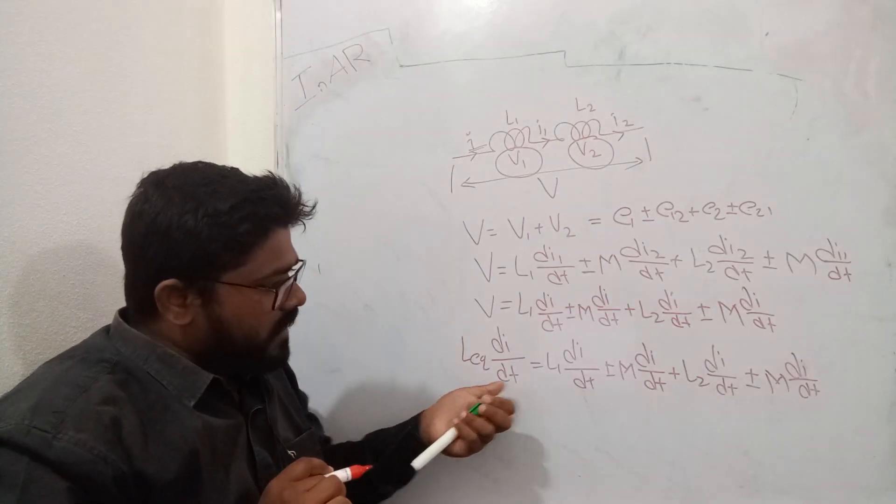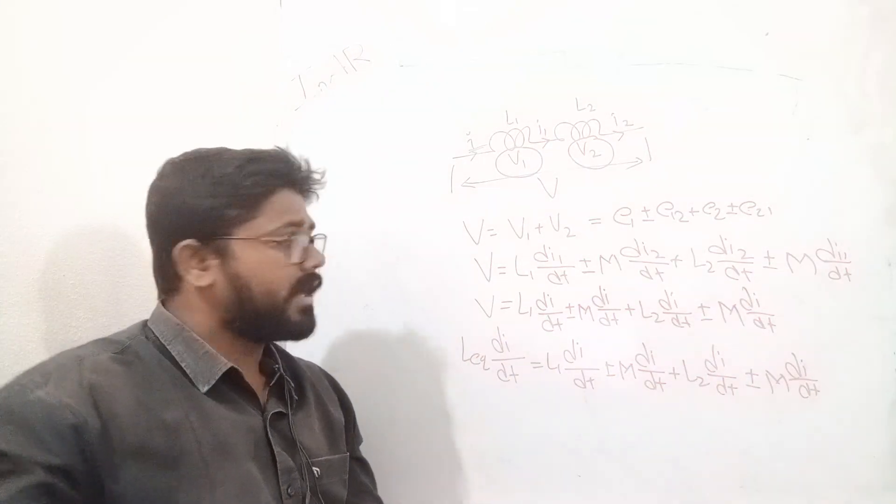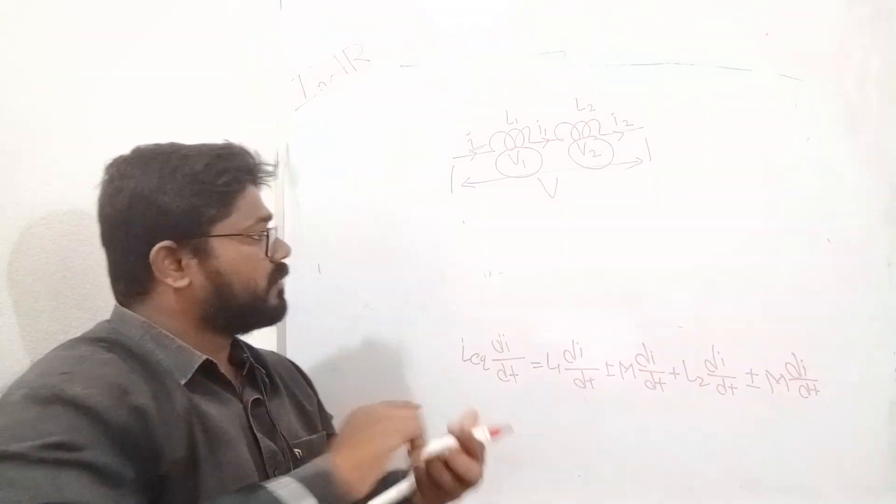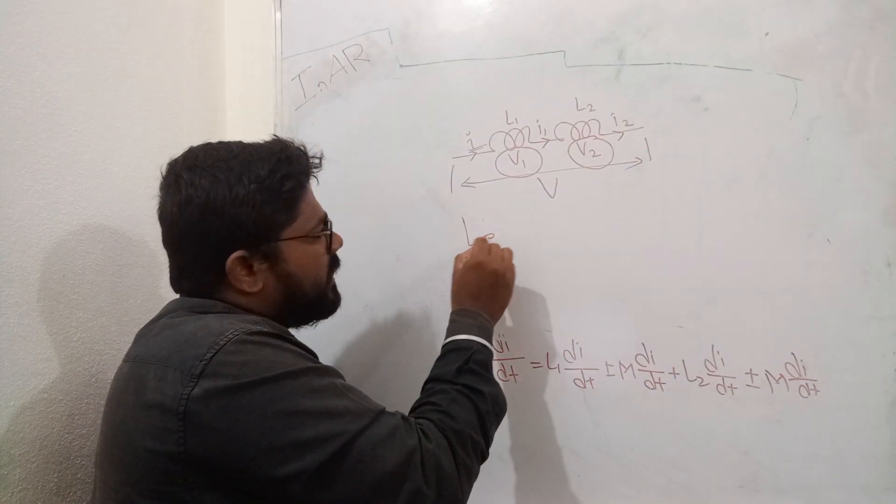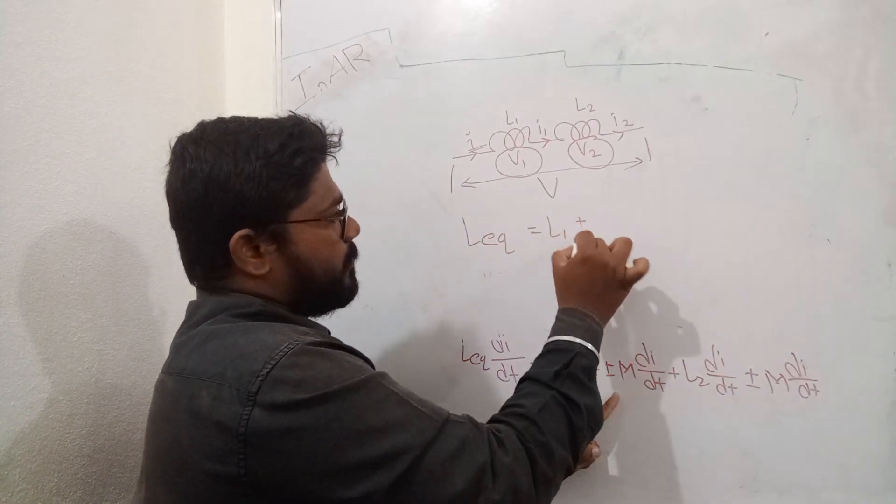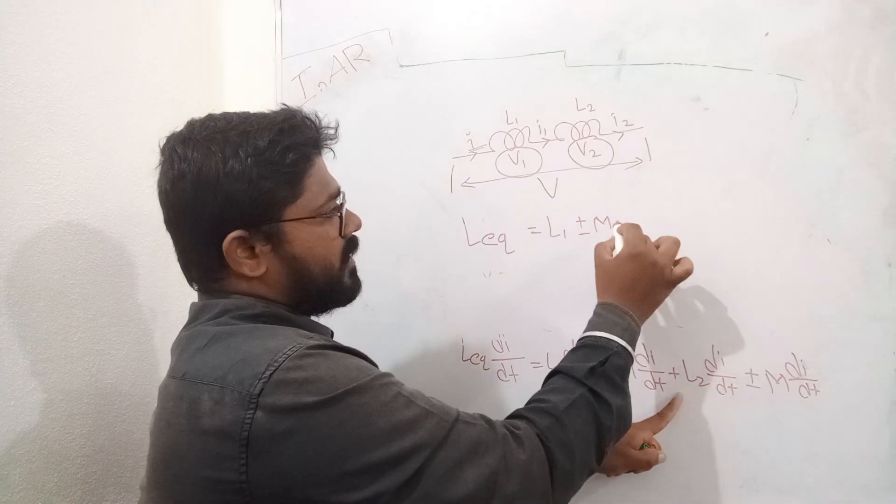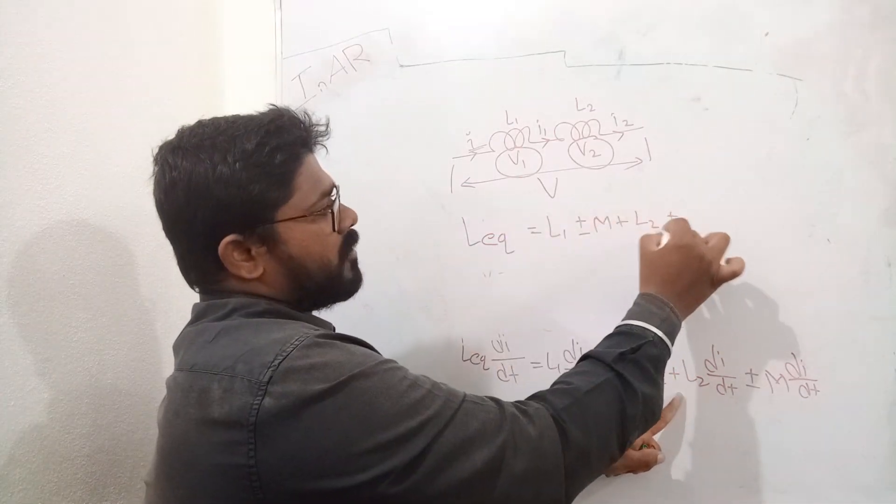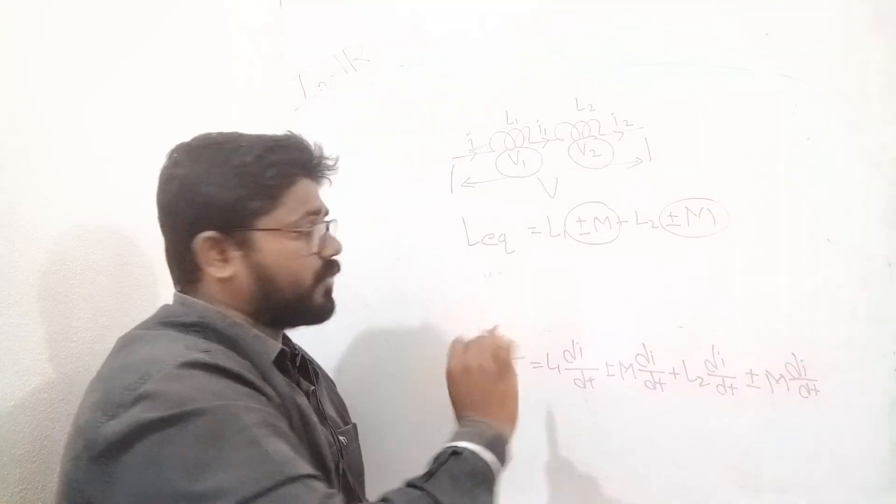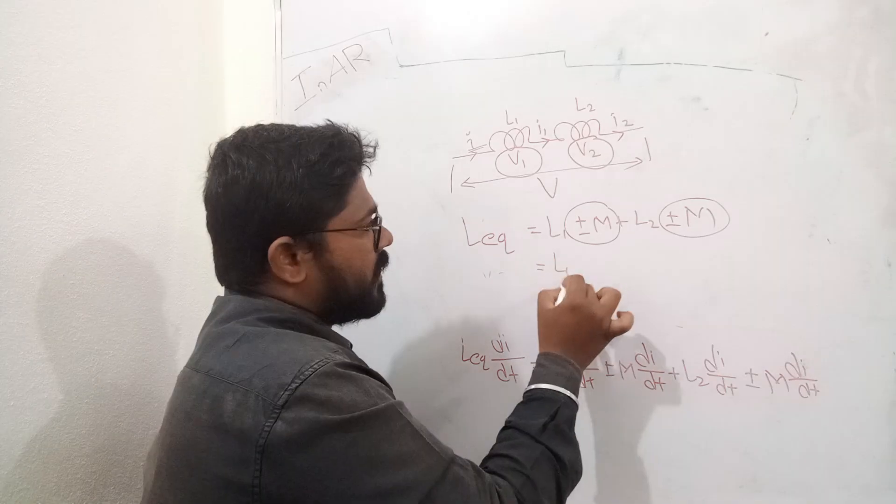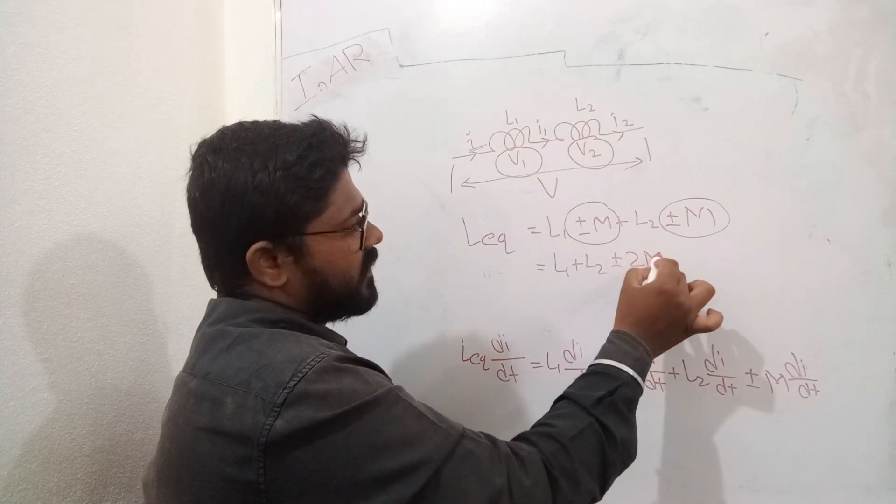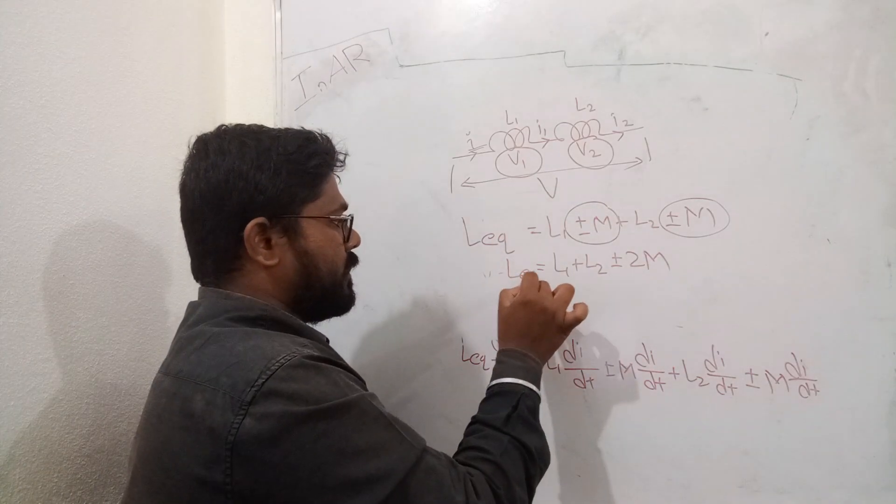If I equate left hand side, right hand side, di by dt common would be. Right? So, then I will cancel this. Value of L equivalent will be equal to L1 plus or minus M plus L2 plus or minus M. This is equal to L equivalent.